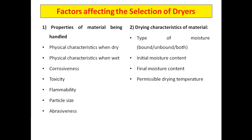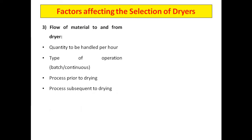Next, the probable drying time for different types of dryers — some types can be used for long periods while others for short times. Other factors include flow of material to and from the dryer, quantity to be handled per hour, the type of operation — batch or continuous — and any process prior to drying that will determine dryer selection.